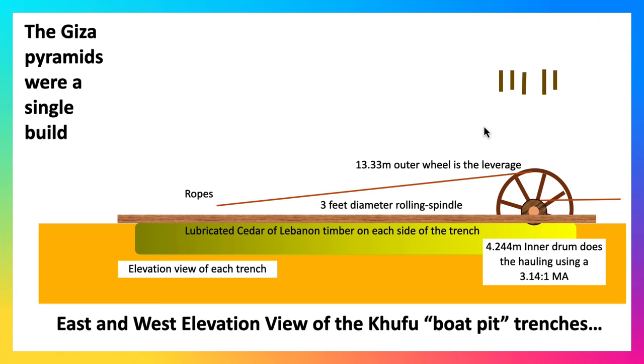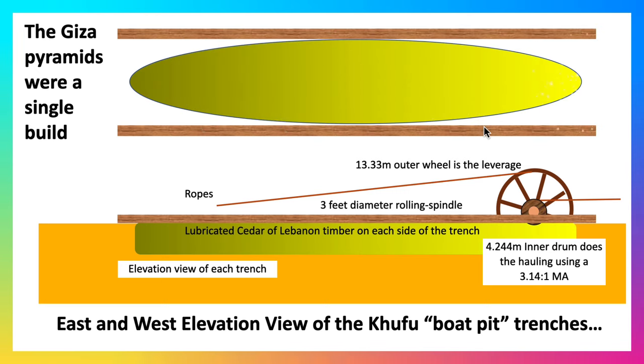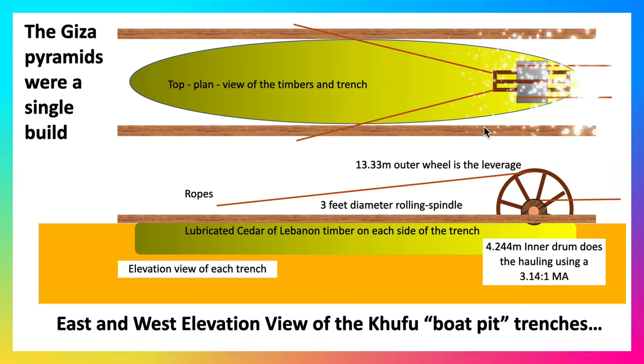Here are the ropes that we're going to get that leverage with. Now here's a top view of what we're looking at. We see the two cedar logs we're going to roll over. There's the trench there, and here's our mechanism right there. There are the ropes and that's where it's going to roll.